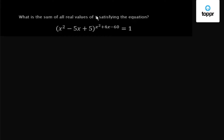What is the sum of all real values of x satisfying the equation (x² - 5x + 5) to the power (x² + 4x - 60) equals 1? To find all real values of x, either the index should equal 0, or the base should equal -1 or 1. Any number to the power of 0 is 1; when base is 1, 1 raised to any power is 1; and when base is -1, we check for even powers.